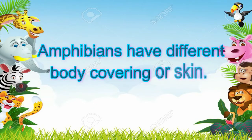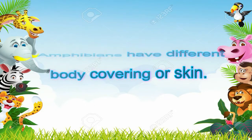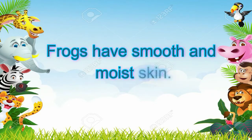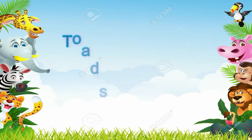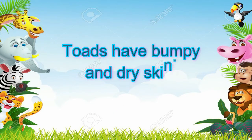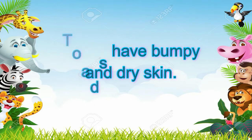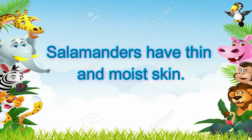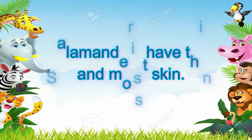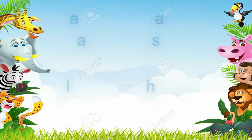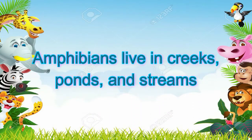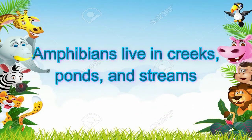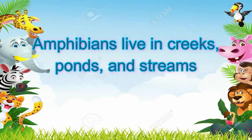Amphibians have different body coverings or skin. Frogs have smooth and moist skin, toads have bumpy and dry skin, and salamanders have thin and moist skin. These amphibians live in creeks, ponds, and streams.